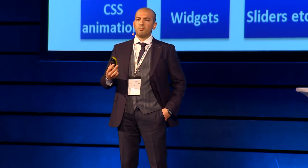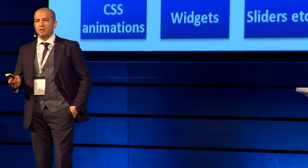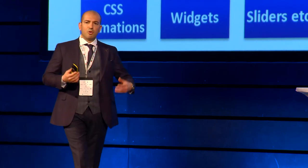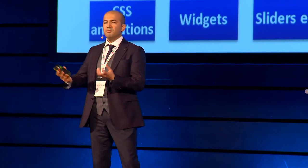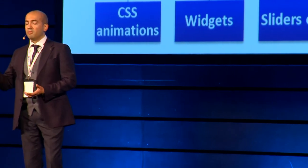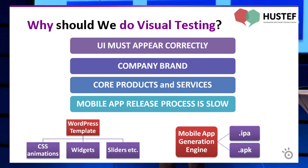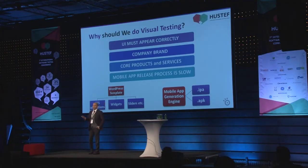Also, if you provide core products such as a WordPress template or a mobile application generation engine, you have to do visual testing. Because your customers use your core product to build their products, and if you provide a visual defect in your core product, they will output the same visual defects. Mobile application release processes are slower than web applications because of iOS and Android approval processes. So if there's a problem on your mobile application, you and your customer will live with that bug much longer. We have to do visual testing for mobile applications.